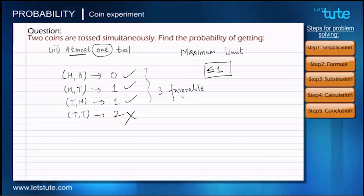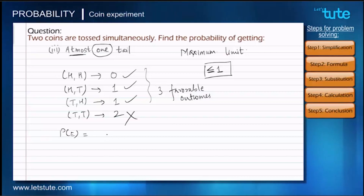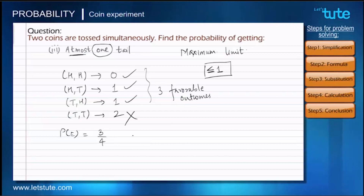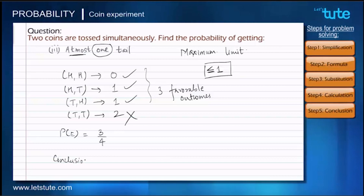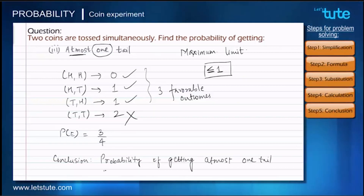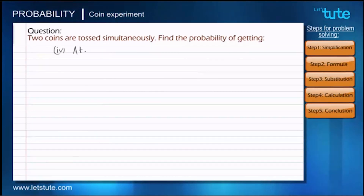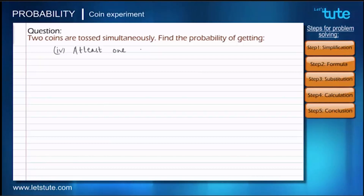We have three favorable outcomes for at most one tail. Substituting into the formula: 3 upon 4. This ratio is already in simplest form. We conclude: the probability of getting at most one tail while tossing two coins is 3/4.